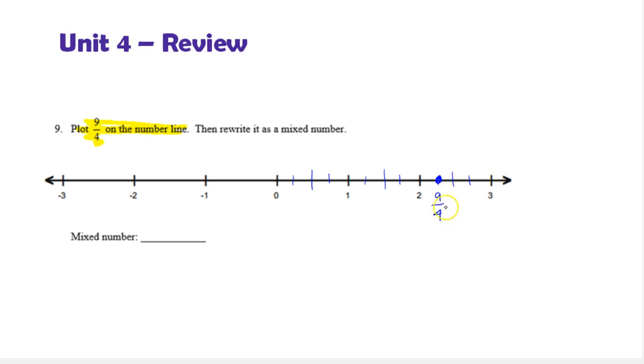Now to write 9 fourths, which is an improper fraction because the numerator is greater than the denominator, as a mixed number, we can use the number line. We want to find the largest whole number of times that 4 goes into 9, which is 2.